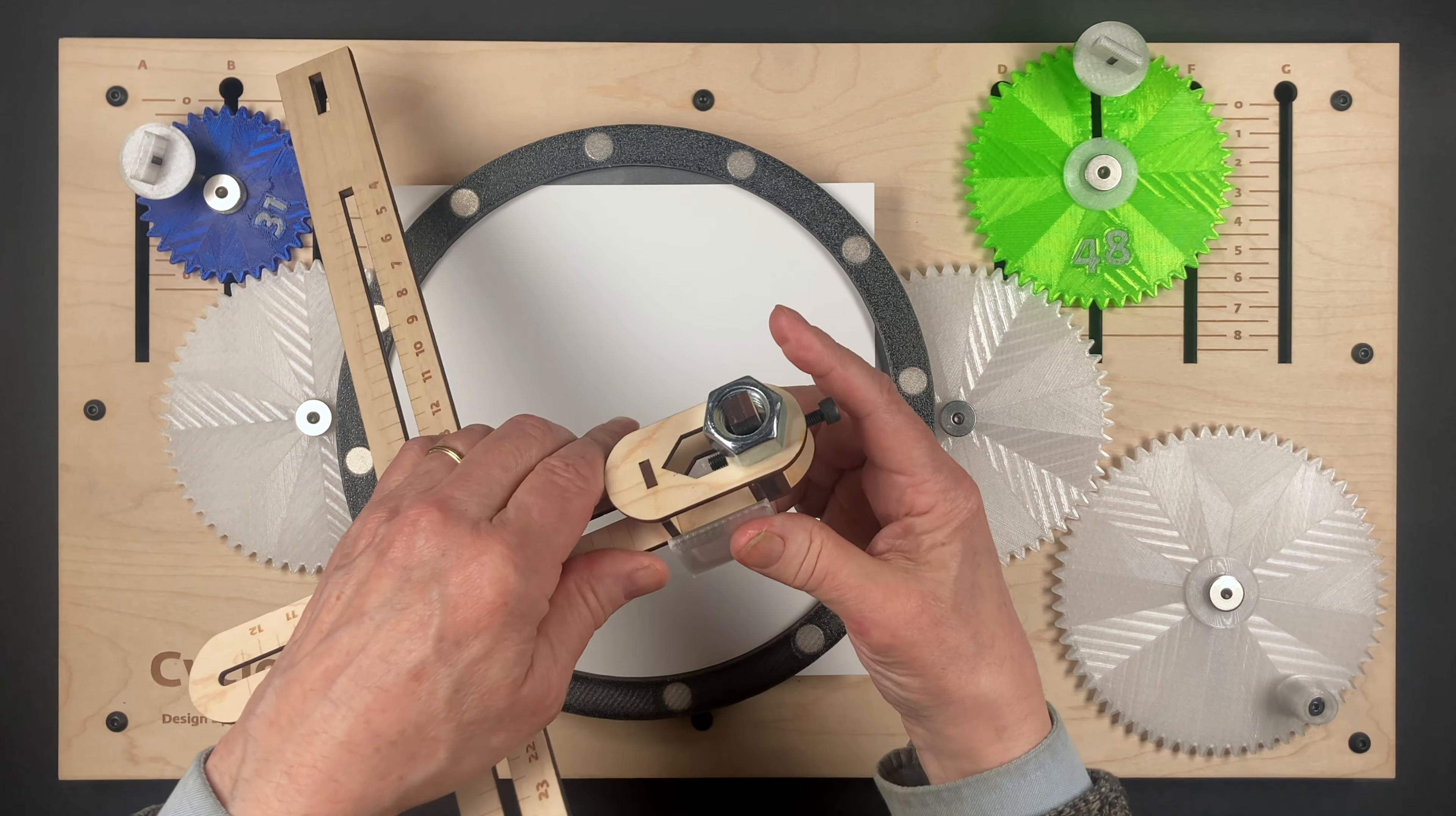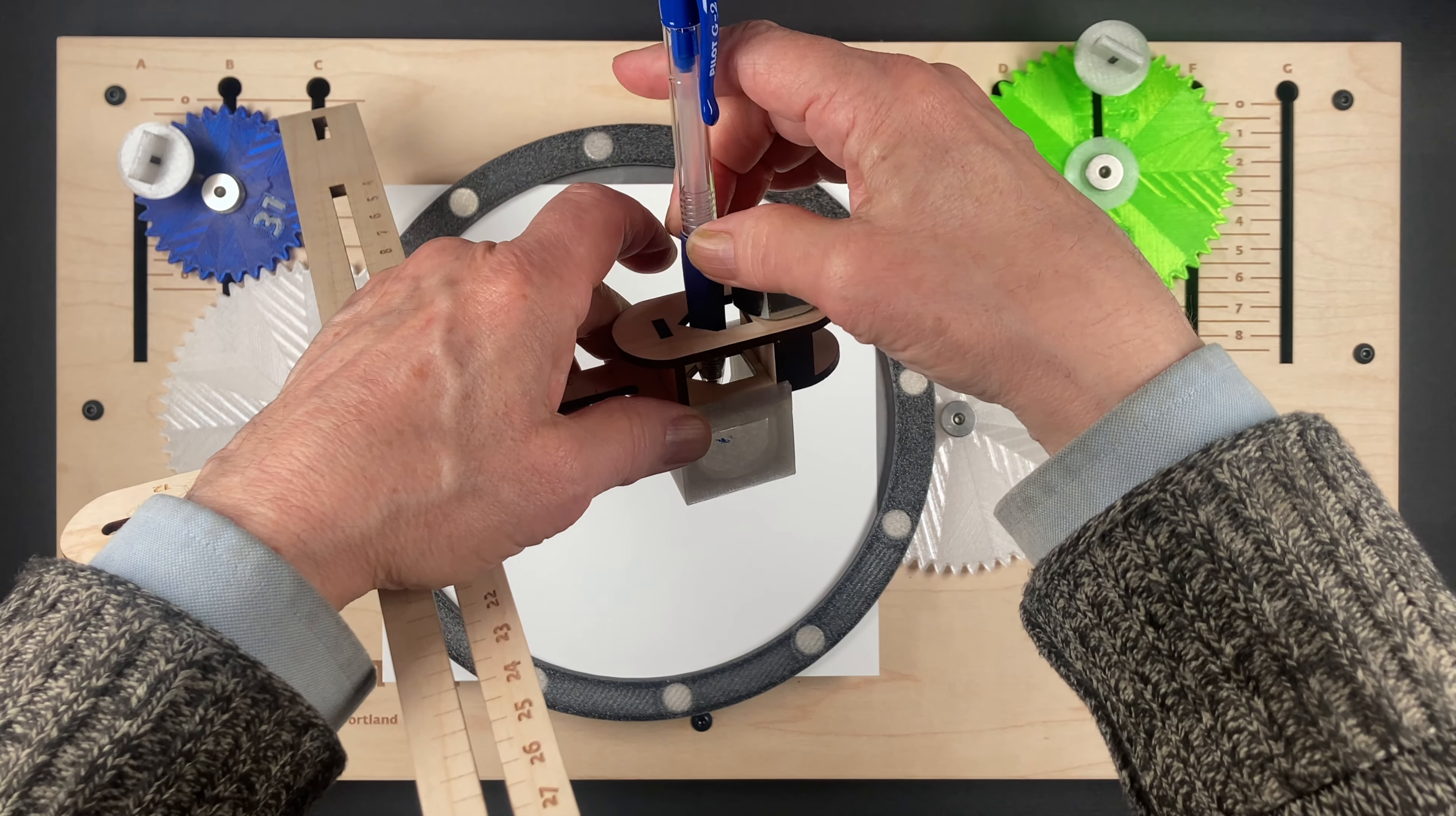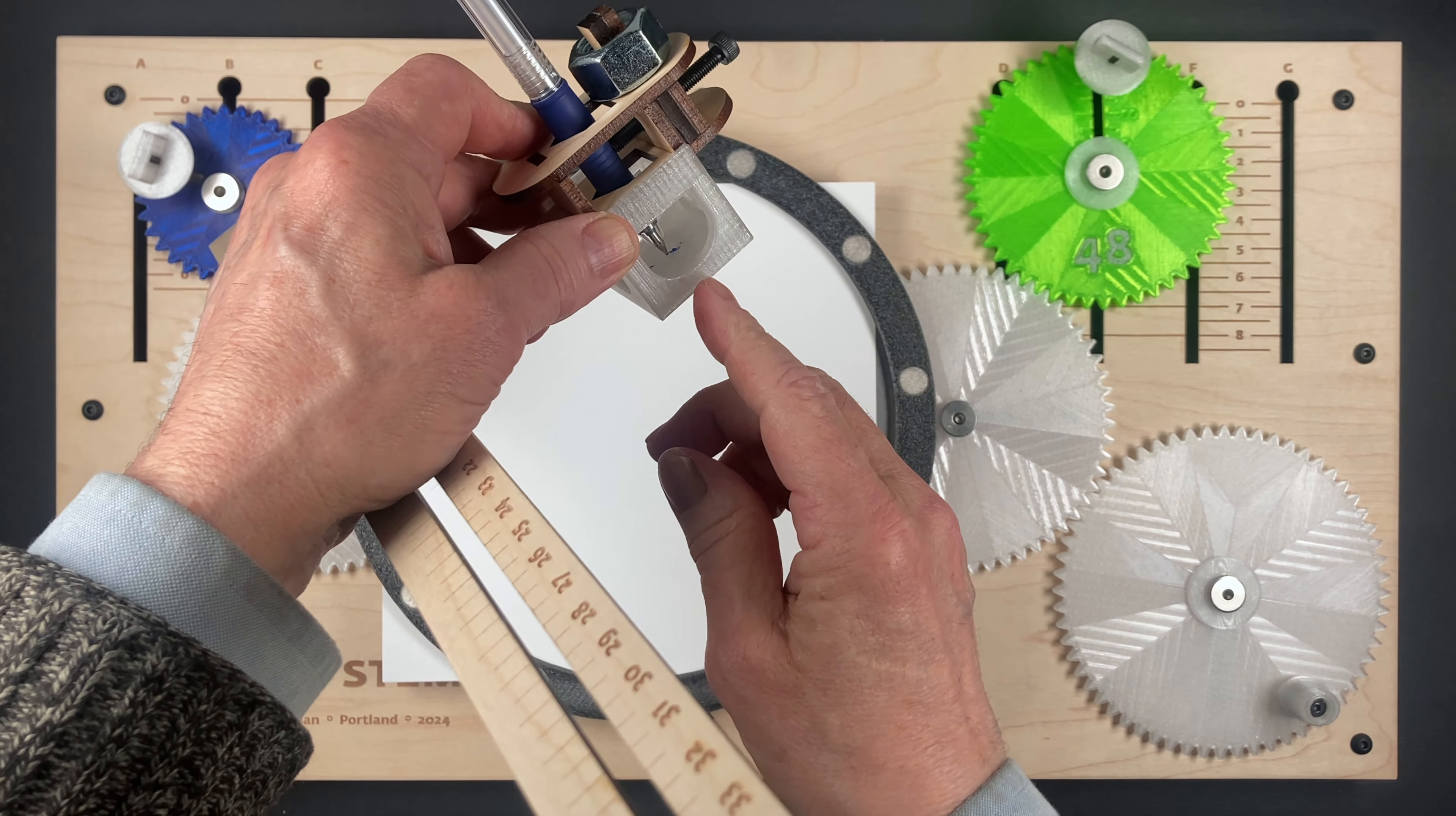Just slide the alignment jig on the bottom, take a pen, click it, slide it into the pen holder slot, and tighten it up so it's at the bottom.